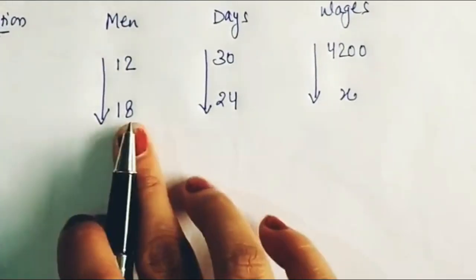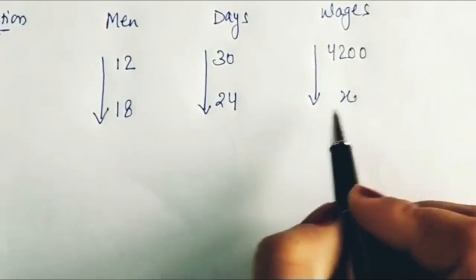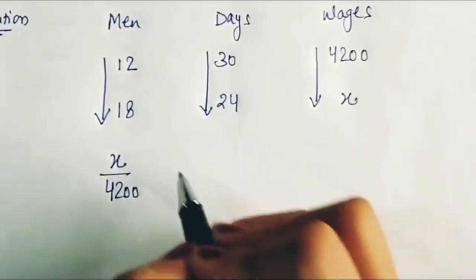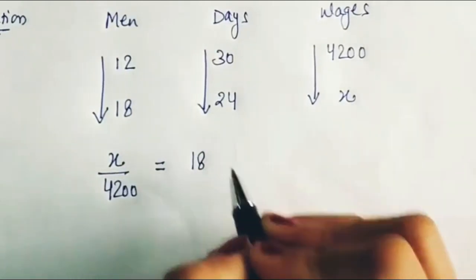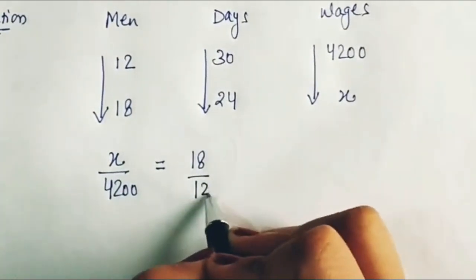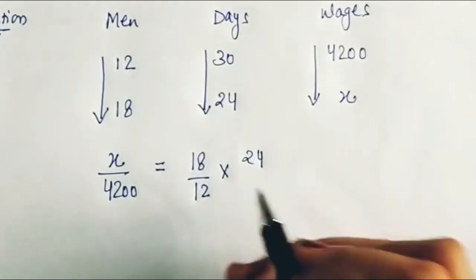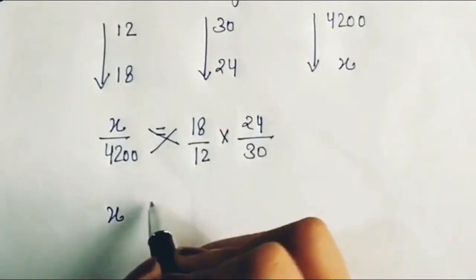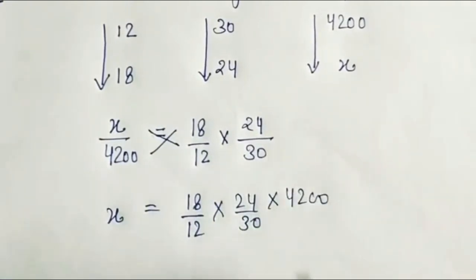Next, using these arrow pointers, we form an equation and solve it. The unknown quantity x is always written on the left-hand side. So x by 4200 equals — for men the arrow points towards 18, so 18 goes in the numerator over 12; for days the arrow points towards 24, so 24 goes in the numerator over 30. Now we simply solve using cross multiplication to get the value of x: 18/12 × 24/30 × 4200.